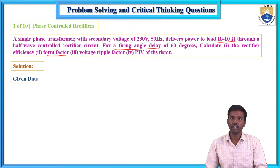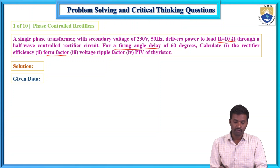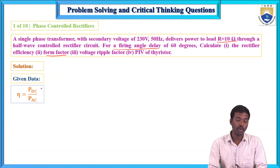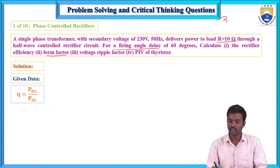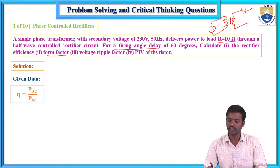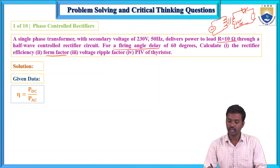Solution and given data: the efficiency equals output divided by input. Here we have a transformer — the secondary winding is connected to the AC supply, it is a step-down transformer, connected to a thyristor phase-controlled rectifier, and this is connected to the load. The transformer secondary is connected to a 230 volt, 50 Hz supply, there is a thyristor T1, and the load R equals 10 ohms. This is the circuit diagram.